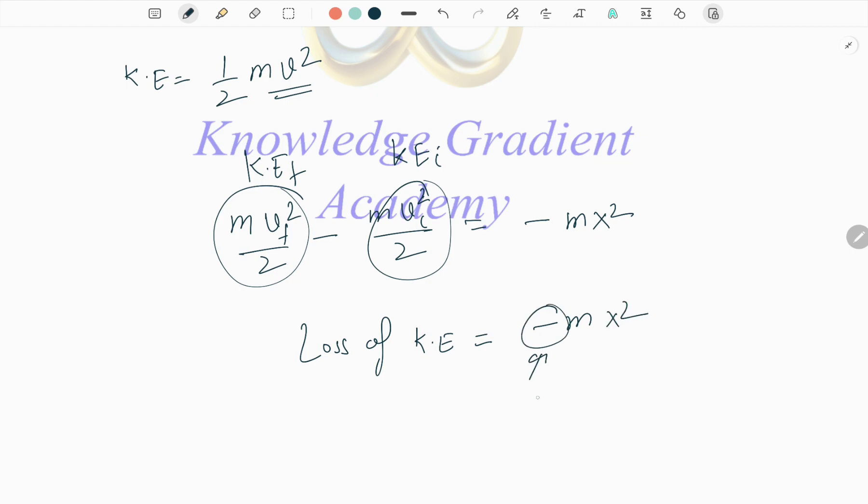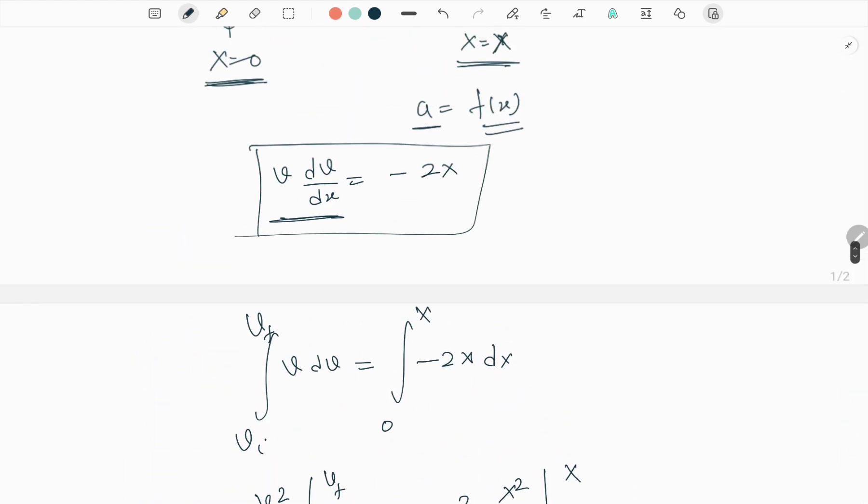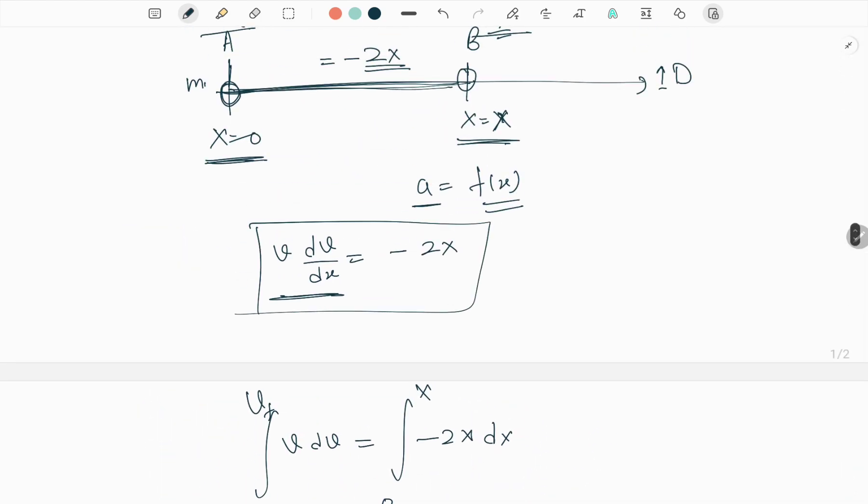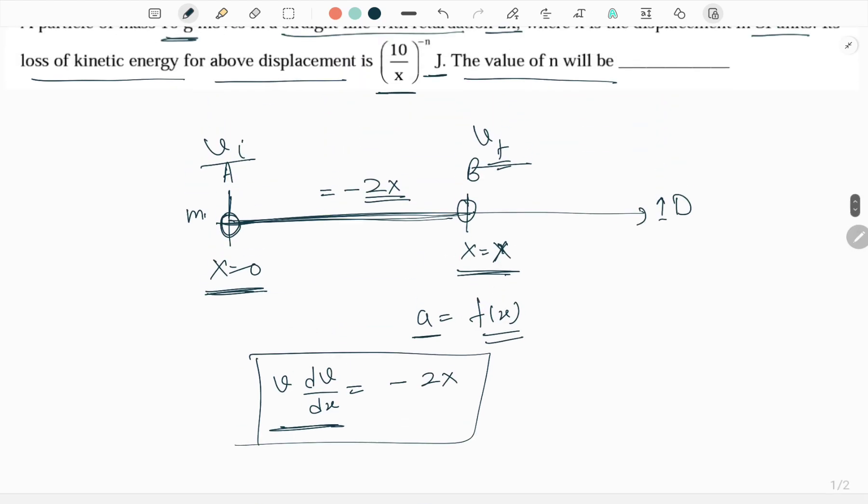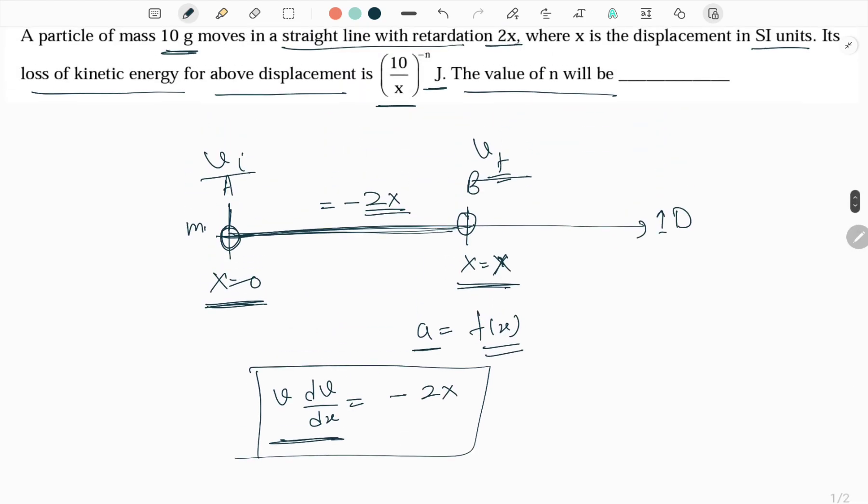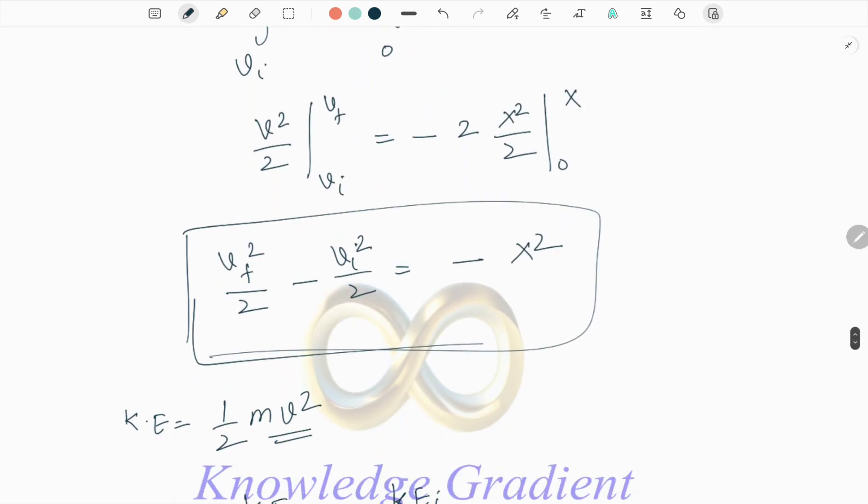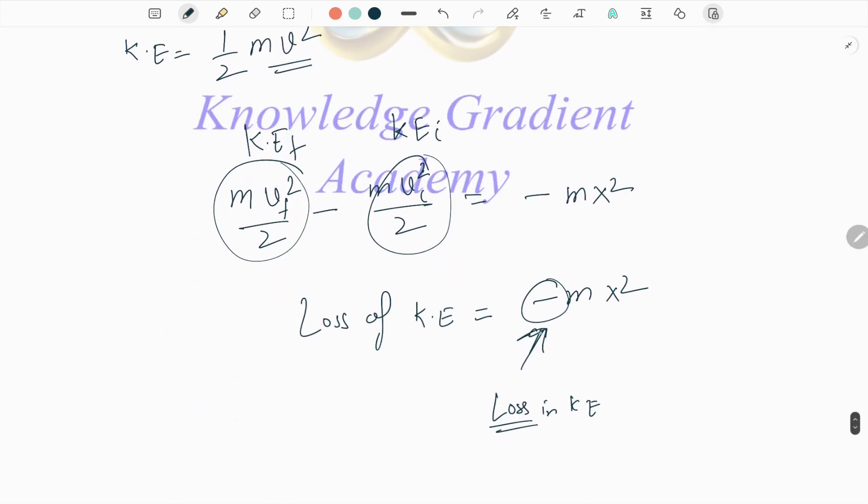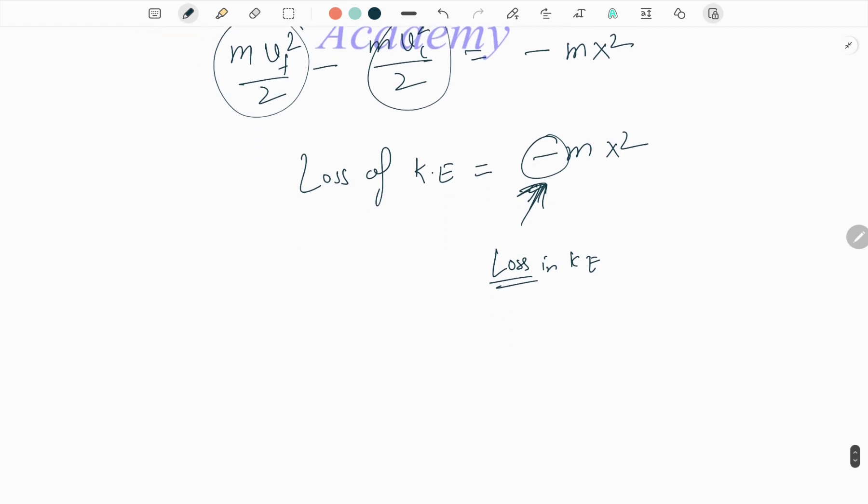So this is loss of kinetic energy which equals minus m x squared. Here this negative sign shows that there is loss in kinetic energy from here to here. If we move, we are losing kinetic energy. Initially kinetic energy is high and as the particle gets retarded, the value of kinetic energy is decreasing. That's why this negative sign, but we have to just consider the exact value and that is m x squared.